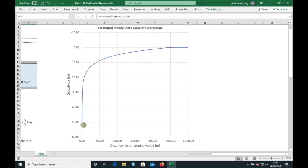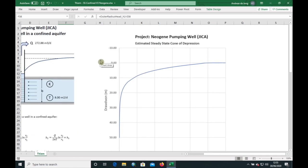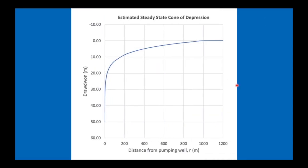You'll notice that there is a very steep cone of depression as we go closer to the well, which means that it has a low transmissivity. In fact, if we go here at 200 meters, we still have a drawdown of 8.74 meters. That means that if we're pumping from the Neogene, you'd have quite a big influence on any wells in the area.